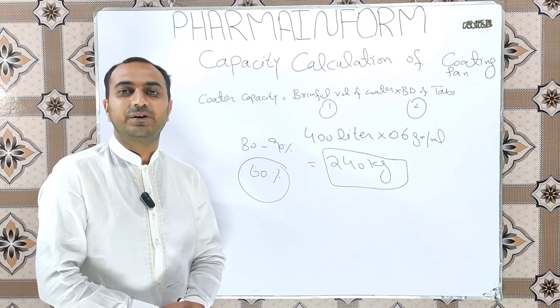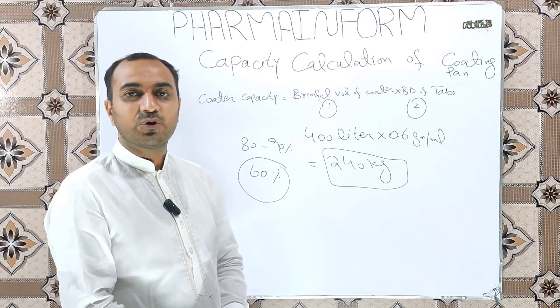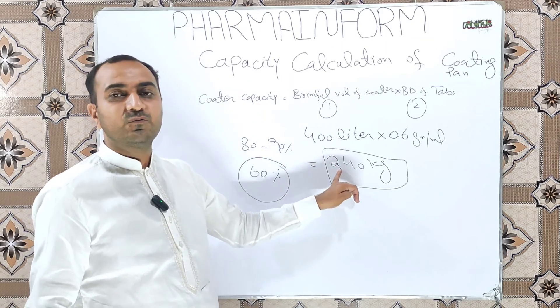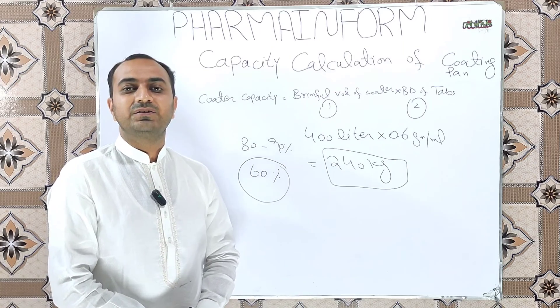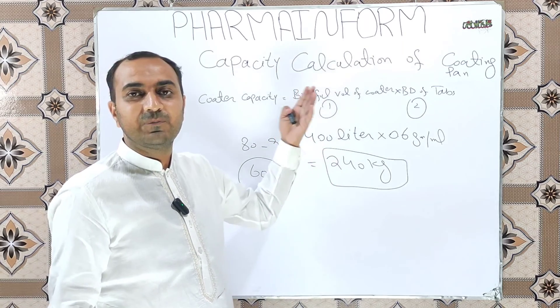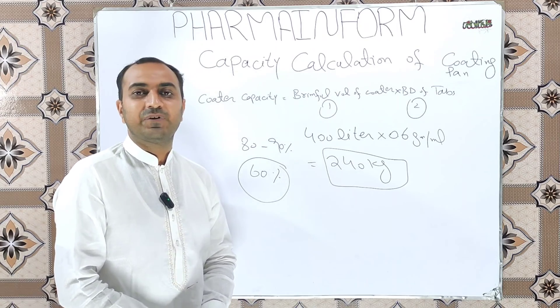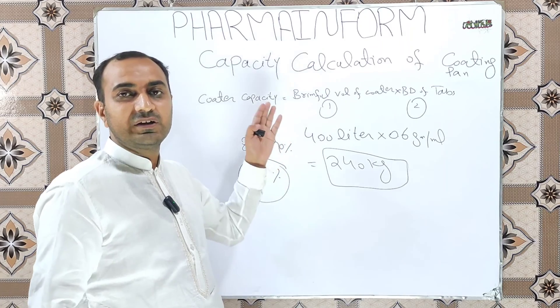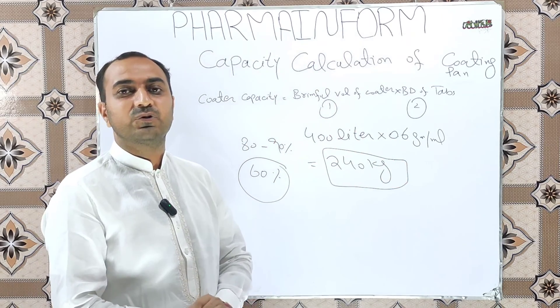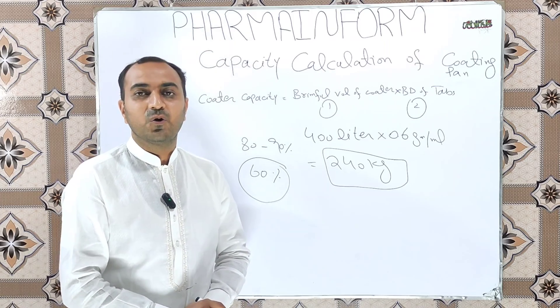And why we do not take 100% of the coating pan? If we take 100% of the coating pan and add 240 kilograms of the tablet in the coating pan, when 3 to 5% weight gain is achieved, the tablets will come out of the coating pan when we open the door. Because of this reason, we usually take 80 to 90% for the upper side and 60% for the lower side.